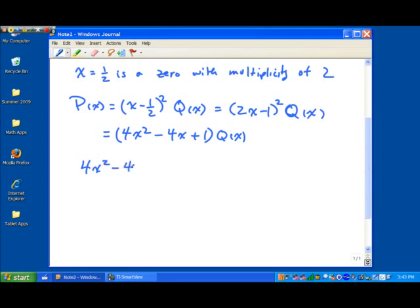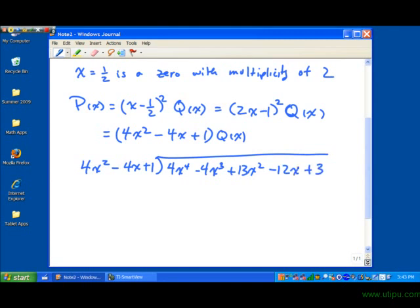Our divisor is 4x squared minus 4x plus 1. And then our dividend is p of x, 4x to the fourth minus 4x cubed plus 13x squared minus 12x plus 3. So let's go ahead and start dividing here.